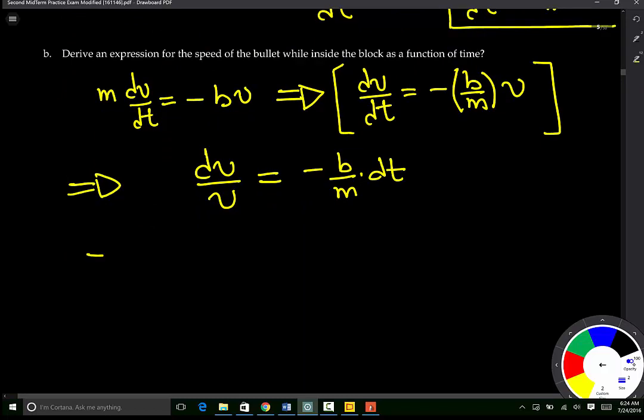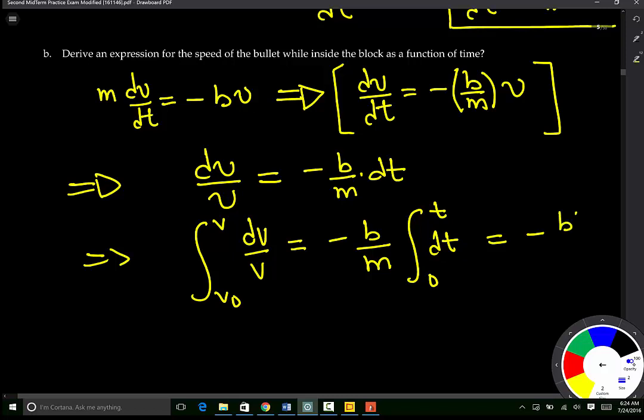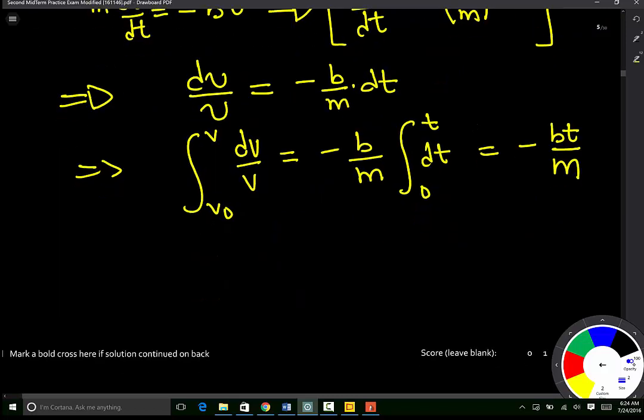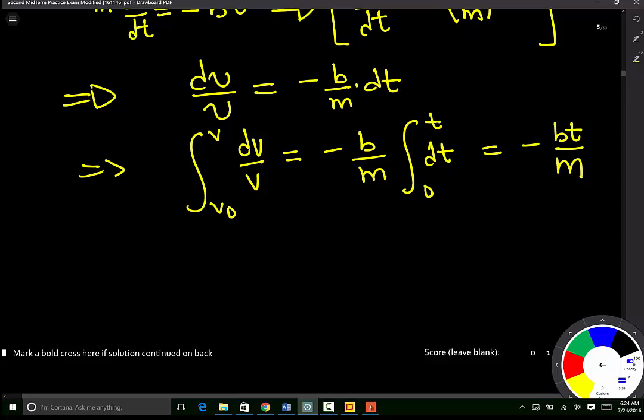If we take the integral of both sides, that is the integral from v0 to v of dv over v, all of this will be equal to negative B over M, the integral from 0 to t of dt. And this is just going to be negative Bt all divided by M. Looking at the left-hand side, this is the natural log of the absolute value of v from v0 to v, all of this equal to negative Bt over M.